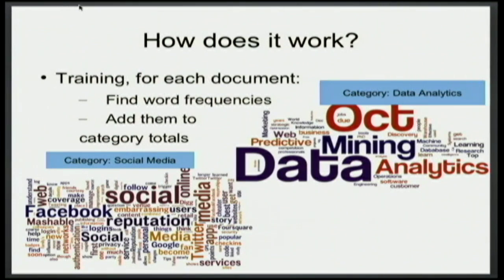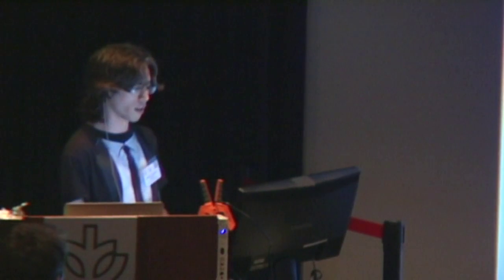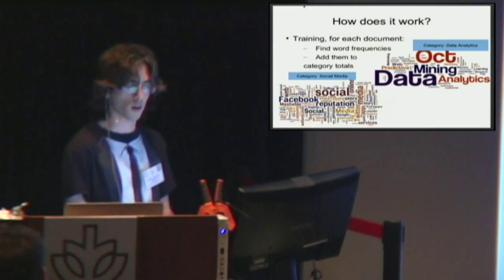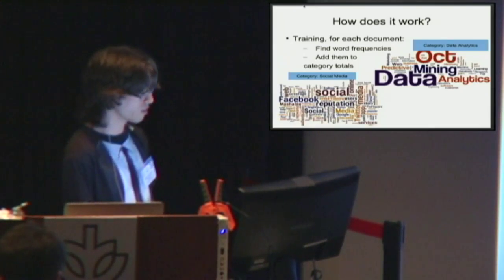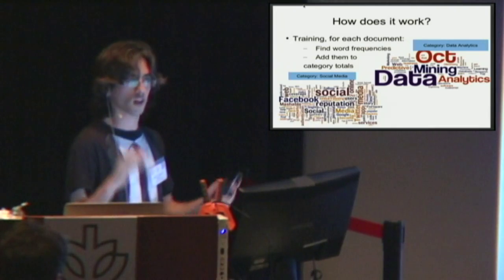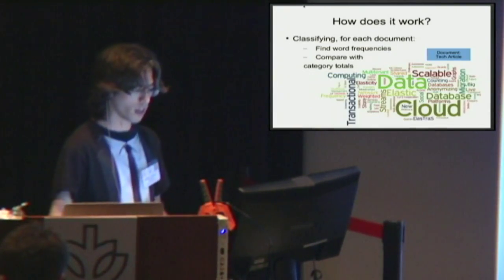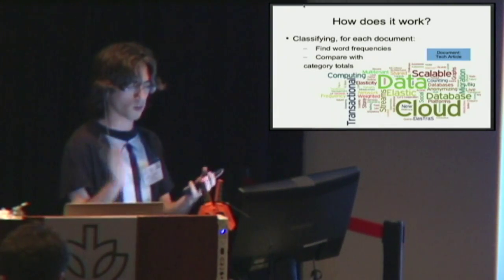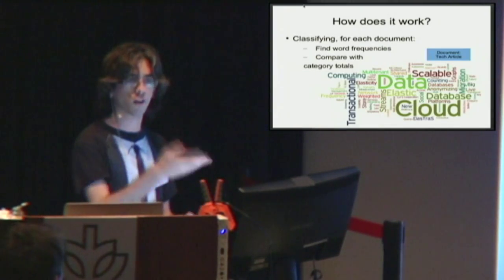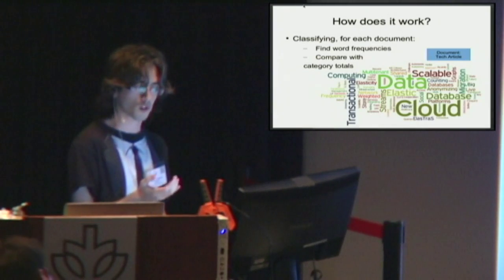One way to visualize that is by looking at word clouds. The bigger the word, the more frequent that word is. When you're training, you just average out all of the document frequency. And then for classifying, you just compare those document frequencies to all the categories and see which one it is most similar to.